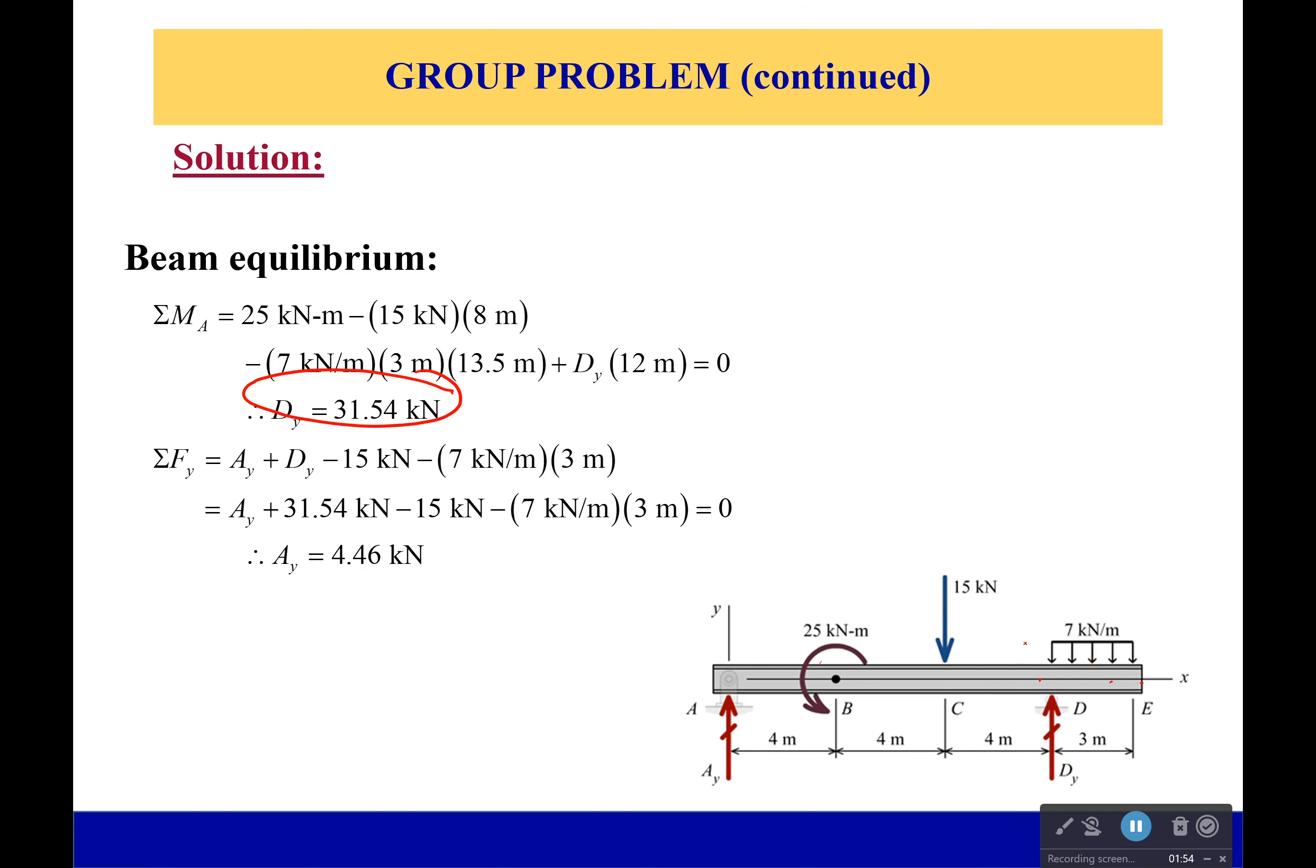And then I use my sum of the forces in the y direction, taking all these forces into account. The moment doesn't do anything, not important for here. And I solve and I get Ay is going to be 4.46 kilonewtons.